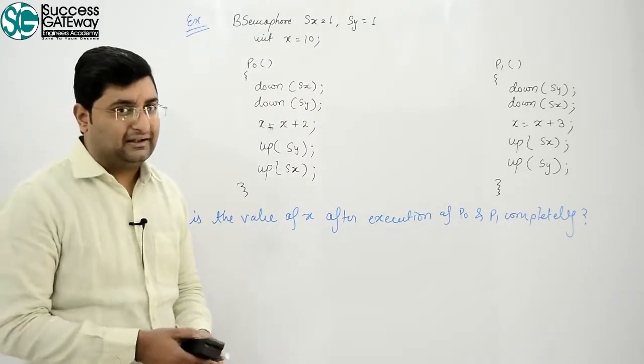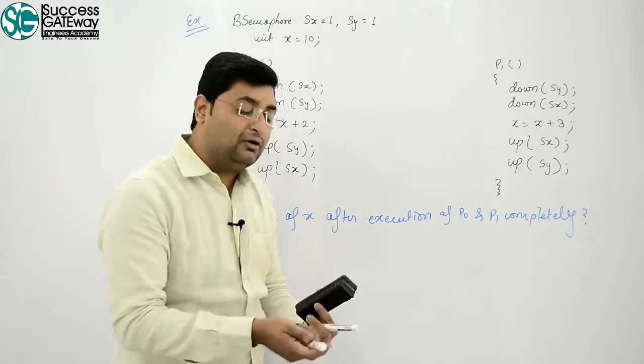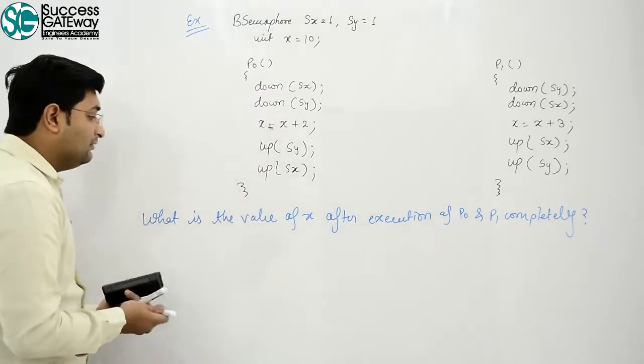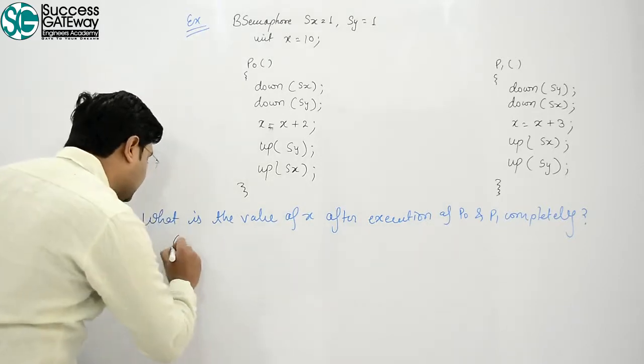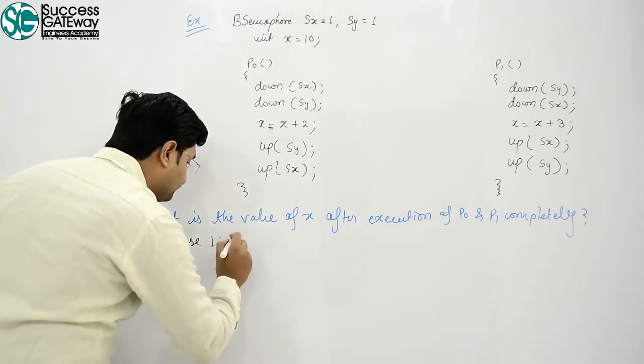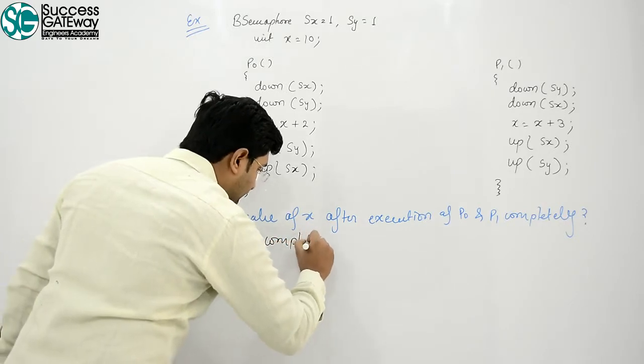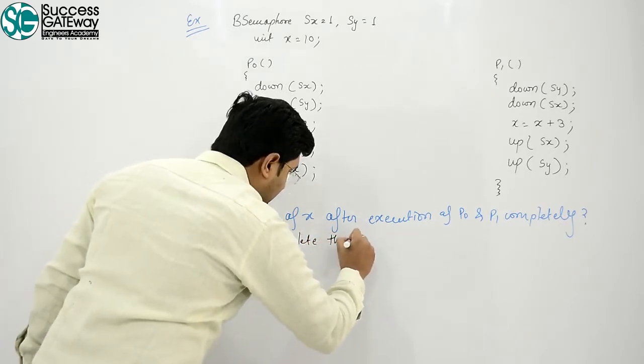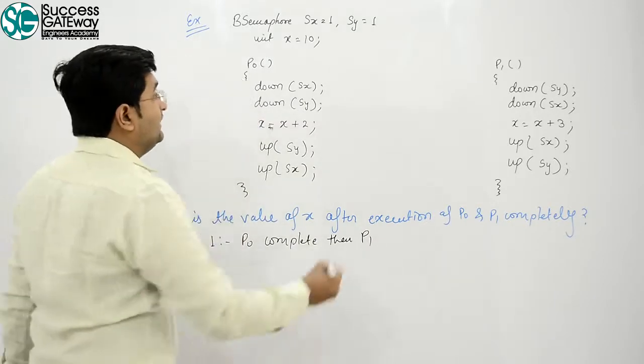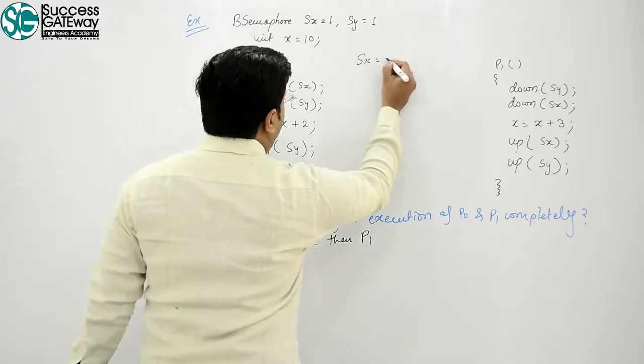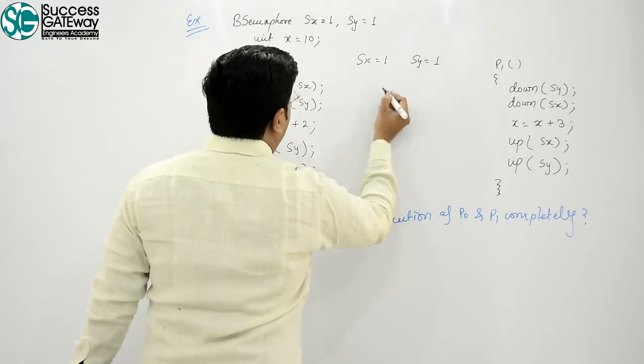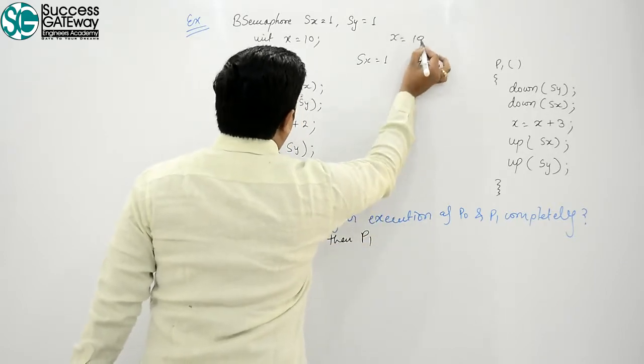Pay attention to what I'm explaining. What we learned from the previous example. Case 1: P0 complete, then P1. This means Sx value is 1, Sy value is 1, and x value is 10.